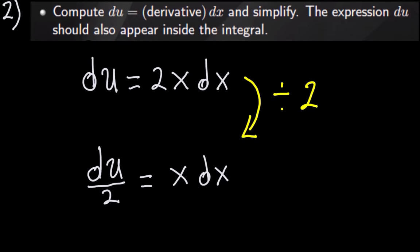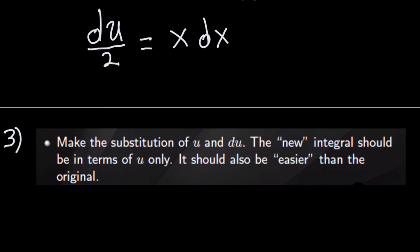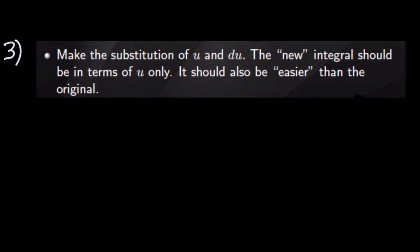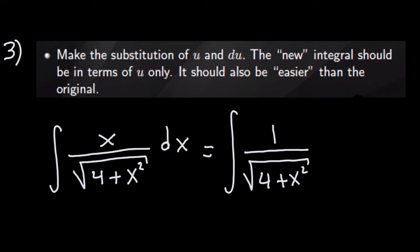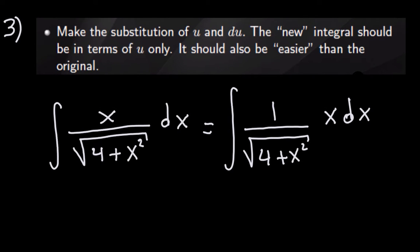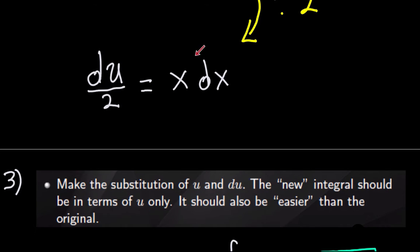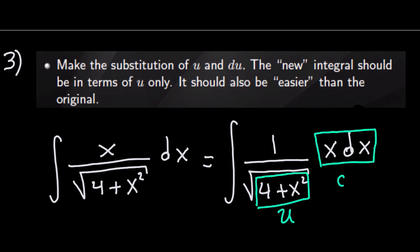Now I'm done with setup, so I can make the actual substitution. I'm going to write down the integral again so you can see all the substitutions. I'll rewrite it by splitting it into a product: 1 over the square root of 4 plus x squared, times x dx. The only reason I did that is so you can now see a little more easily what the substitution will be. The expression inside is u from step one, and this x dx is du divided by 2.